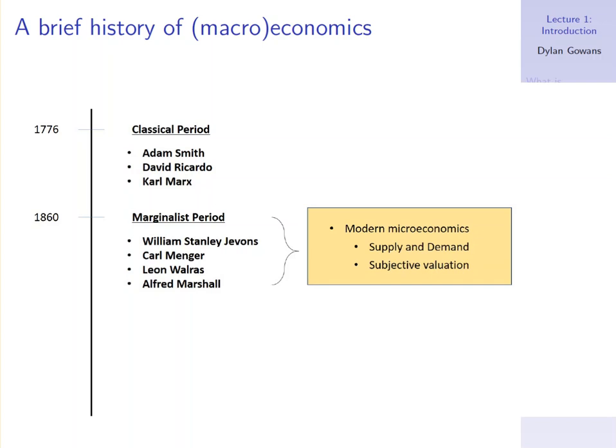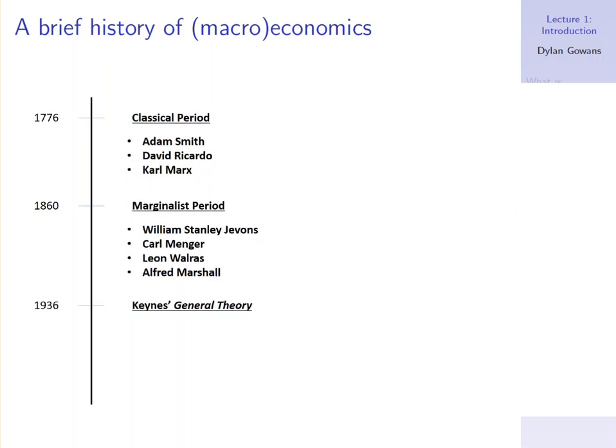They were concerned with microeconomic questions about prices, demand, supply, and things like that. This all changed in the 1930s with the Great Depression, and in particular with John Maynard Keynes' General Theory. Suddenly it became really important to explain economy-wide variables like GDP, the business cycle, or unemployment. This was the main thrust of Keynes' General Theory.